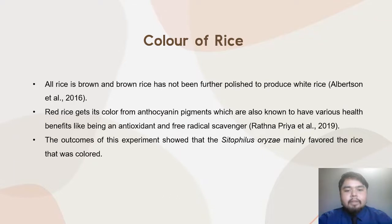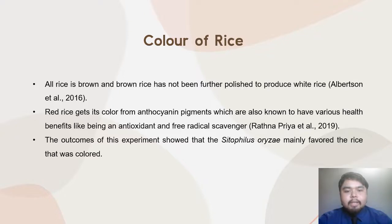Two types of rice have different colors: brown rice and red rice. The other types — local white rice, imported white rice, fragrant rice, basmati rice, pony rice, glutinous rice, and japonica rice — are white in color. All rice is originally brown, and brown rice has not been further polished to produce white rice, while red rice gets its color from anthocyanin pigments, which are also known to have various health benefits like being antioxidants and free radical scavengers. This experiment shows that Sitophilus oryzae mainly favors rice that has color.